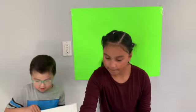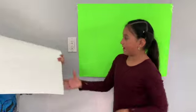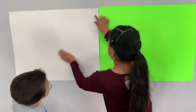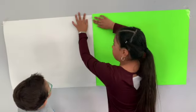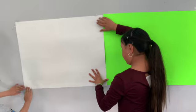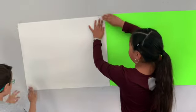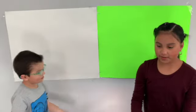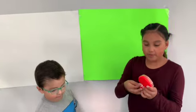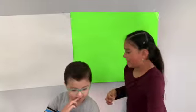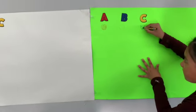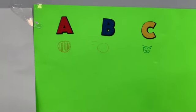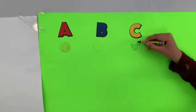Noah's paper is white and mine is different. If it doesn't stick we can use some more tape. We could use a little more tape so I'm going to go ahead and get some. I'm not really good at drawing a cat but I'm going to do my best.